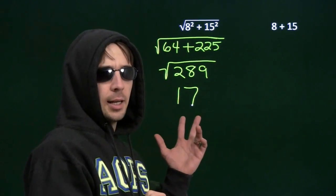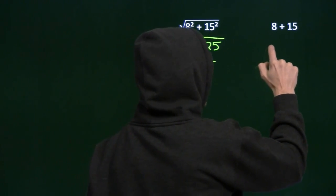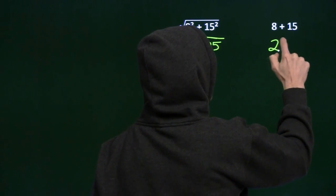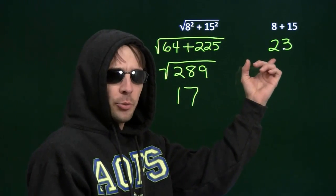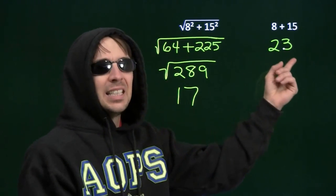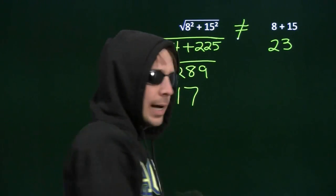Hey, there's 17 again. Now what do you get over there? That's right. You get not 17. 8 plus 15 is 23. 17 wasn't 13. It's not 23 either. 17 is not 23. So these two are not equal.